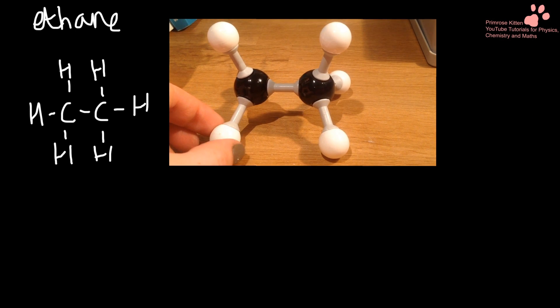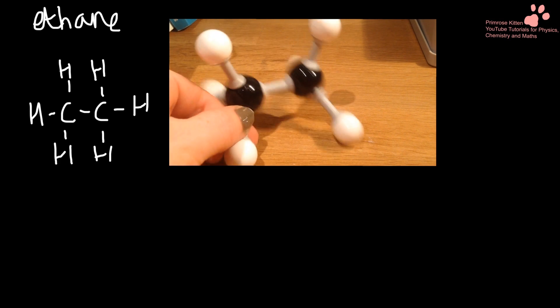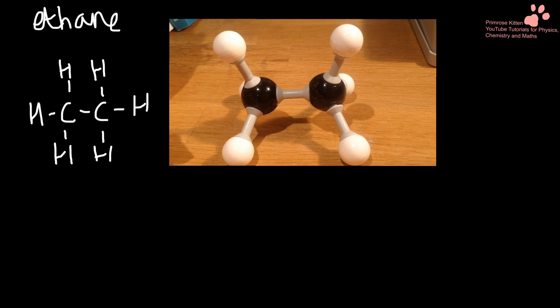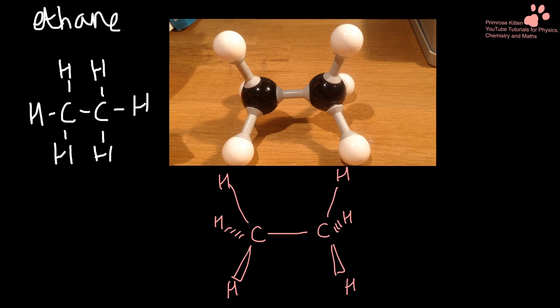Here we have ethane now. You can see again this is not flat as we would have previously drawn. So we now need to work out how to draw this in 3D. So our black bits are our carbons. These are going to be flat. We have hydrogens in the plane of the paper. We have hydrogens behind there in the back of the paper. Hydrogens coming out towards us. And this is going to give us again a tetrahedral shape. Because it gives us tetrahedral shape around each carbon. And tetrahedral shapes have a bond angle of 109 degrees.